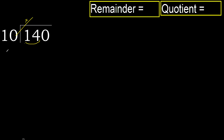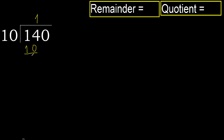10 multiplied by 2 is 20 — 20 is greater. Multiply by 1 is 10, it is not greater. Subtract: 14 minus 10 is 4. Next.